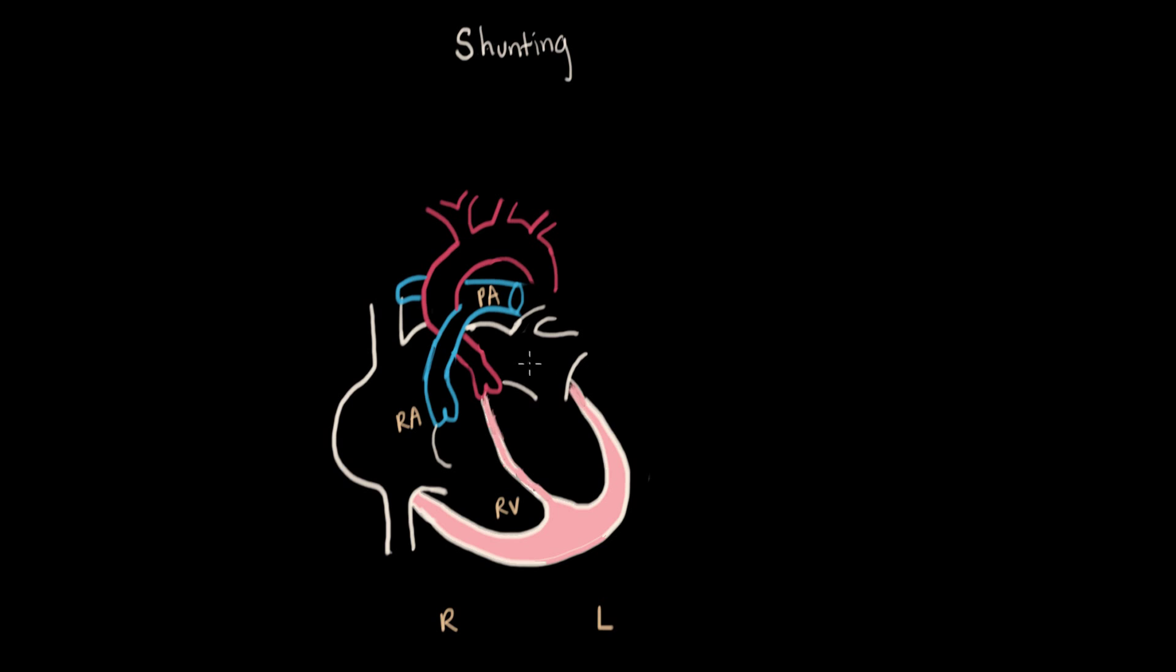Then we have our left atrium going into the left ventricle. And here this big red structure, this is our aorta. Actually, let's just write out the whole thing, aorta.